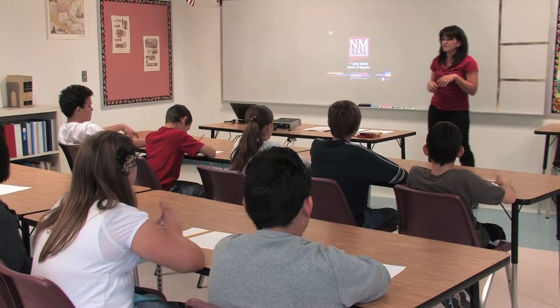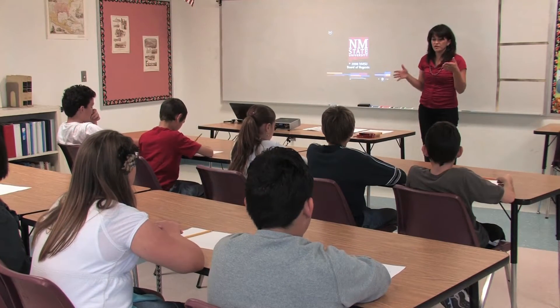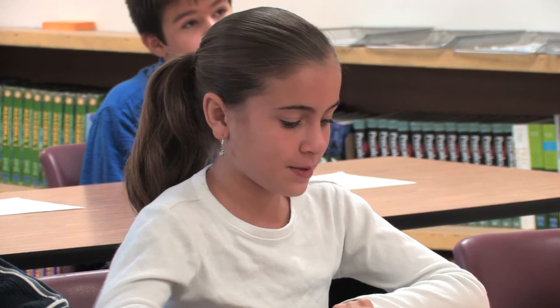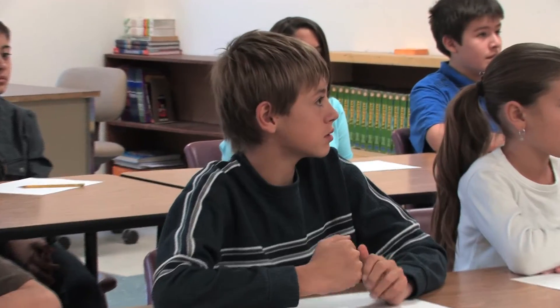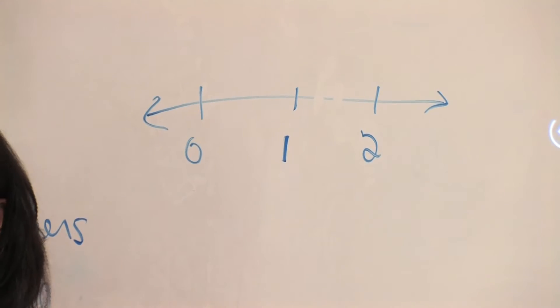Now it's time to discuss the students' number lines. We're going to list all of the properties that they feel are important and then watch the animation. What are some things that are important when drawing a number line? Numbers. What do you have at the end of your number line? I put arrows because the numbers keep going on. You'd want to keep the spacing equal — those spaces have to be the same.